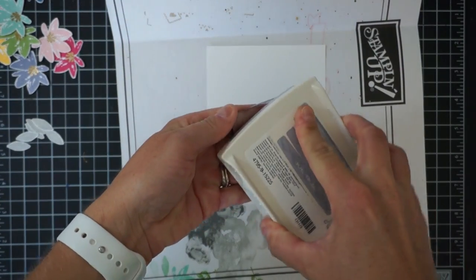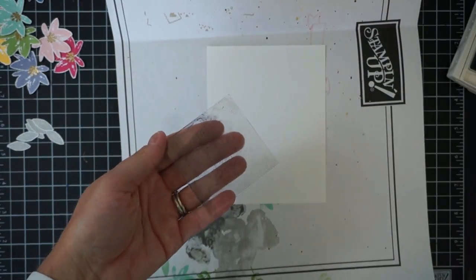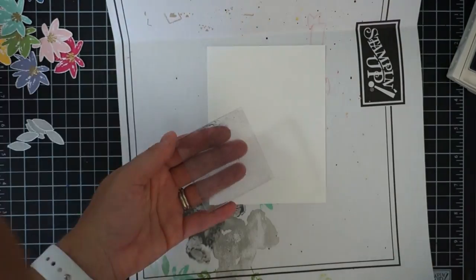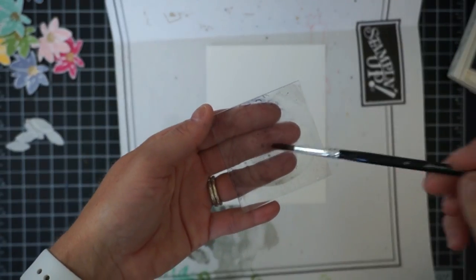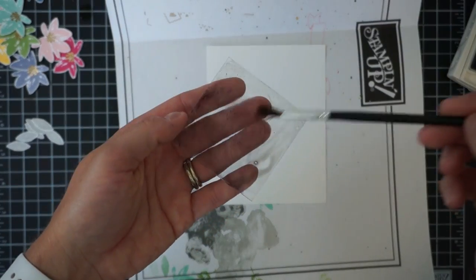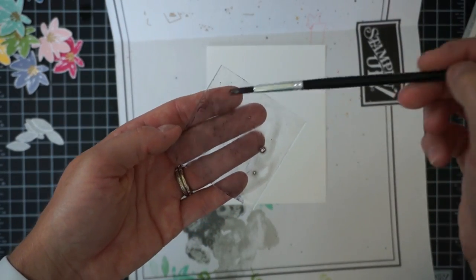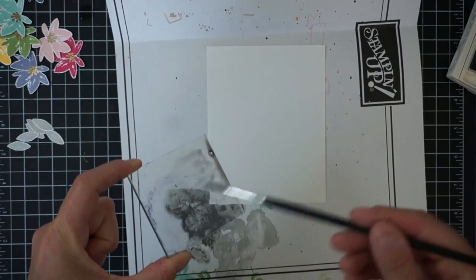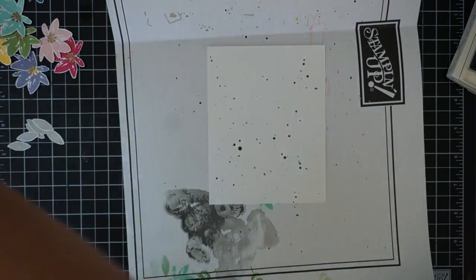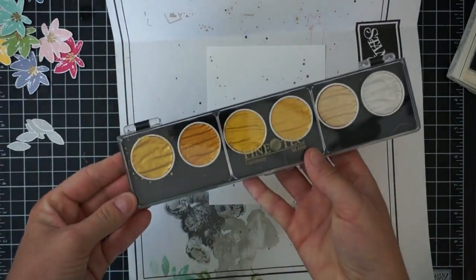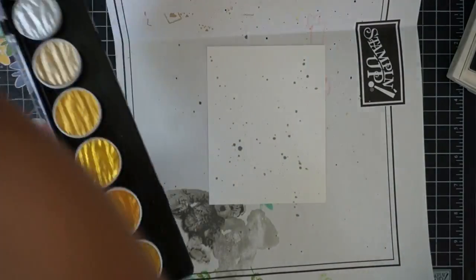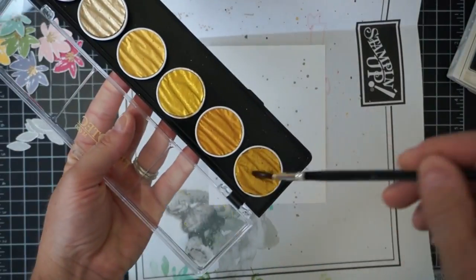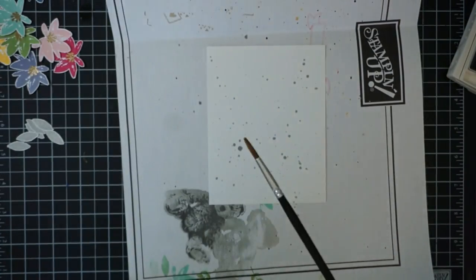I'm going to add some interest to my background. I have another piece of Whisper White cardstock here and I've smushed that Smoky Slate ink pad onto this acrylic block and added a ton of clean water. Then I'm just going to flick that off the edge of that block to give me some great ink splatters. I've also got this FineTec set of metallic watercolors and I'm going to add some gold flecks.